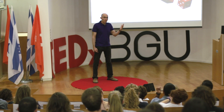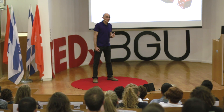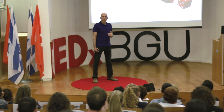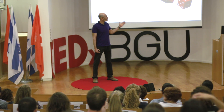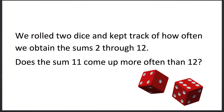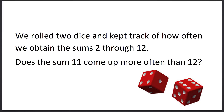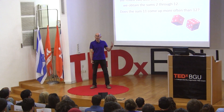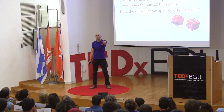Let me give you two examples of my work at Ben-Gurion University that is bringing about this change. I teach introduction to probability, and here is one of the questions I like to give my students. We rolled two dice and kept track of how often we obtain the sums 2 through 12. For example, if one die came out 3 and the other 4, the sum is 7. I asked the students: do you think 11 comes out more often than 12?